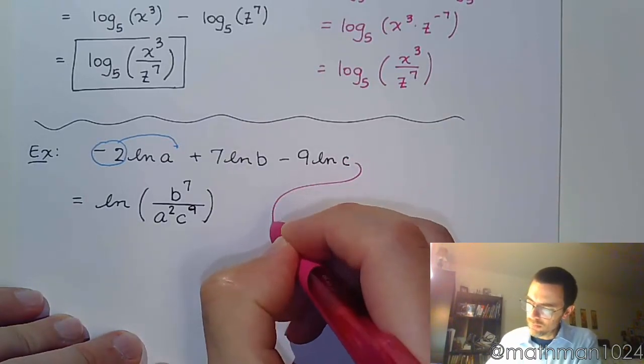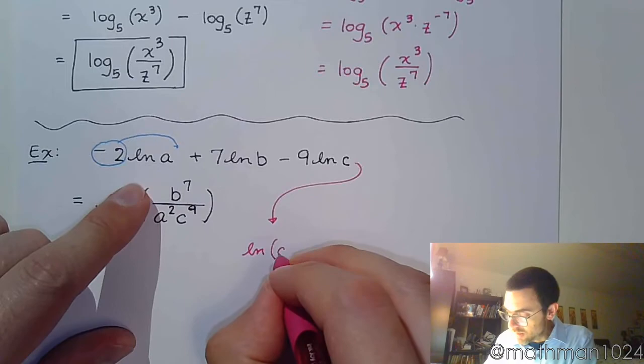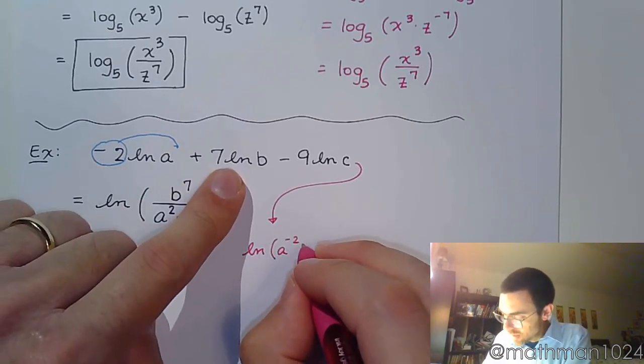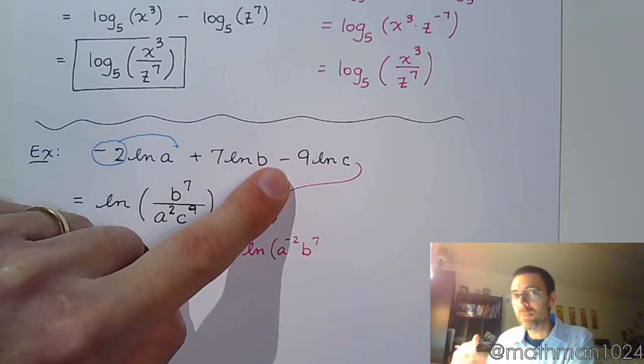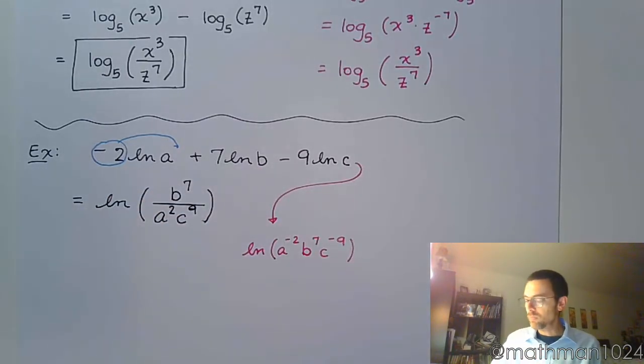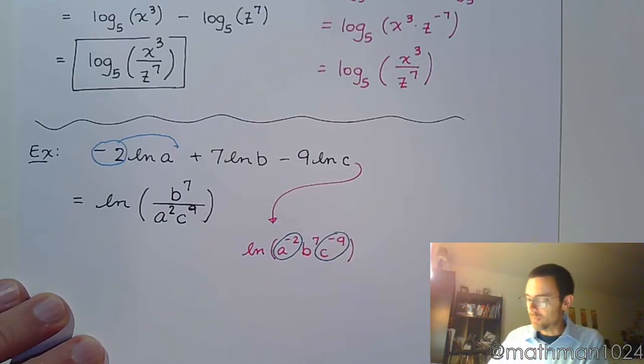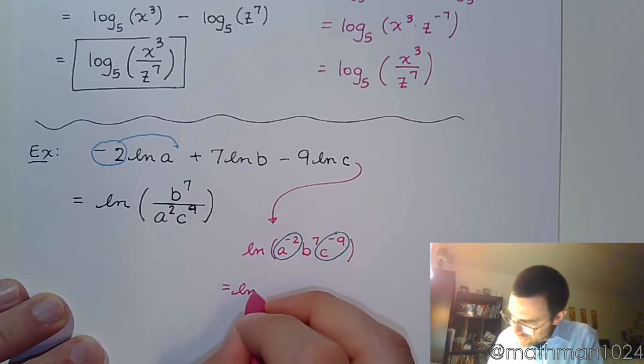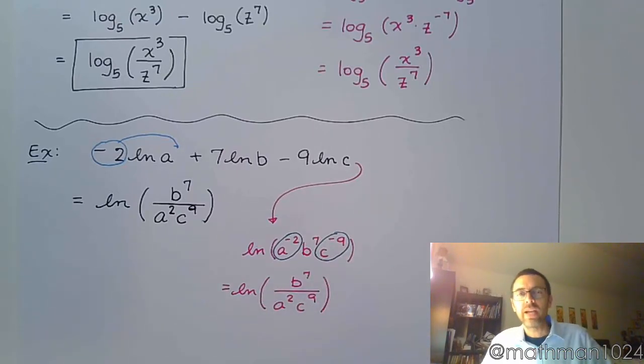Another way of looking at this is you can put this all together as a single expression and say a to the negative 2nd, b to the 7th, just doing multiplication, not even seeing that as subtraction but as a plus negative 9, and then c to the negative 9th. But then you've got these two guys right here, a to the negative 2nd and c to the negative 9th. You don't want to leave negatives in your answer, so you kick both of those factors into the denominator. This is why I like exponents. There are so many different ways of getting to the same right answer.